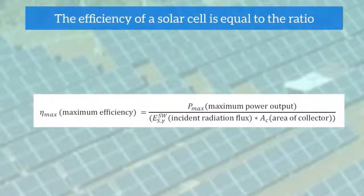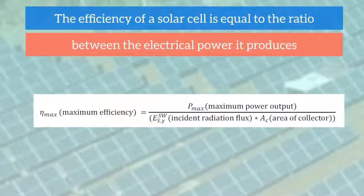The efficiency of a solar cell is equal to the ratio between the electrical power it produces and the power it receives from the sun.